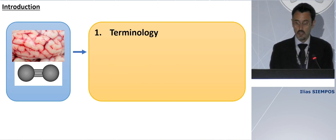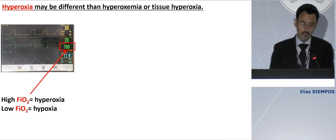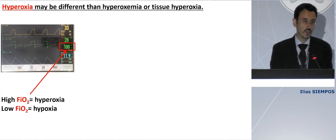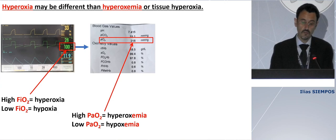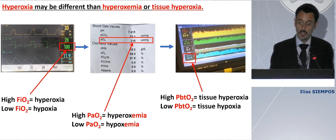Regarding terminology: we are Greeks, we are obsessed with language, and I think it is important to distinguish some terms. Hyperoxia may be different than hyperoxemia or tissue hyperoxia. Here is the monitor of a ventilator. The patient is receiving 100% FiO2 — this is hyperoxia. So high FiO2, high fraction of inspired oxygen, means hyperoxia; low FiO2 is hypoxia.